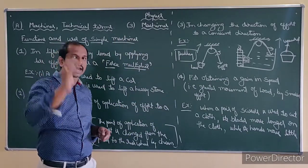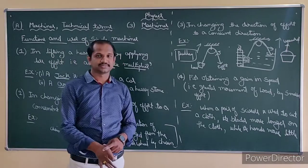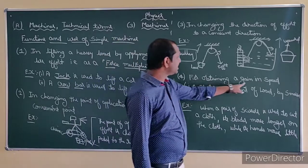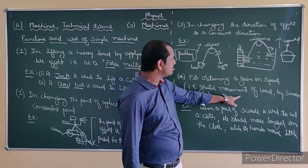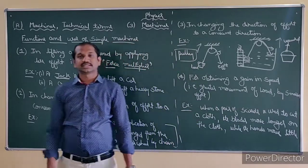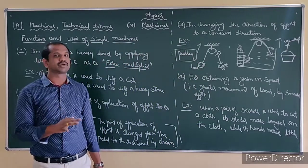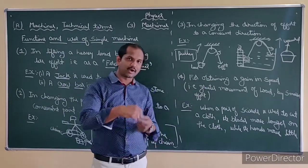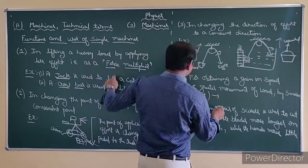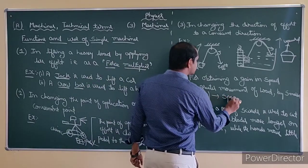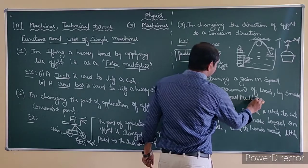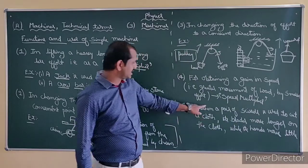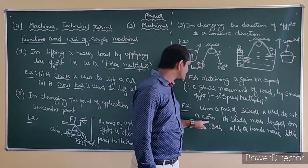The concept of pulleys we are going to study in part B of the machine chapter — it is very very important; there will be questions from there. Now let us see the last function: obtaining a gain in speed. That is, greater movement of load by smaller effort. This is also called a speed multiplier. By obtaining a gain in speed — this function is called a speed multiplier.